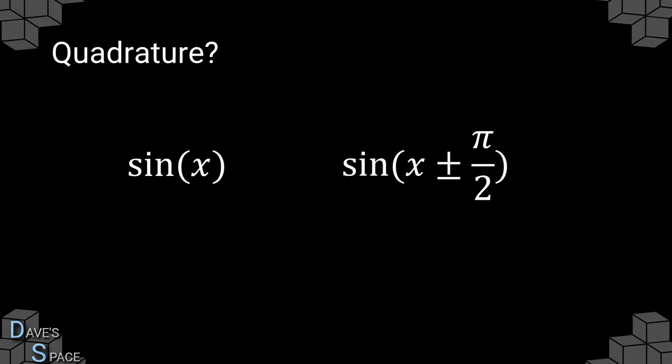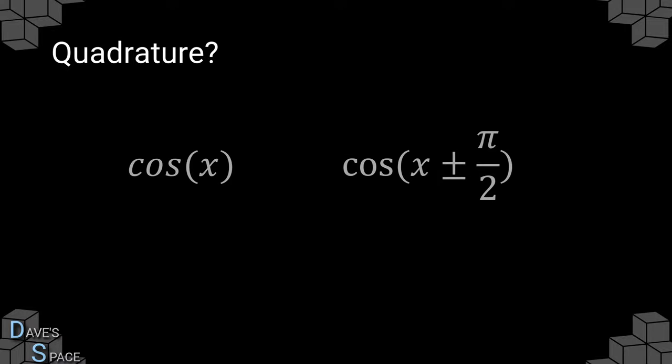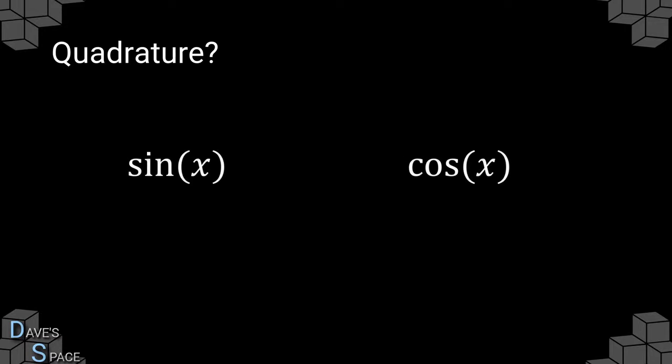So how do we add quadrature components to our amplitude modulation? Quadrature simply means two signals which are out of phase by plus or minus 90 degrees, or plus or minus π/2. For example, sine and sine of (x ± π/2) are two quadrature waves. Likewise, cosine and cosine ± π/2 is also a quadrature signal. So naturally, sine and cosine are two signals that are in quadrature.